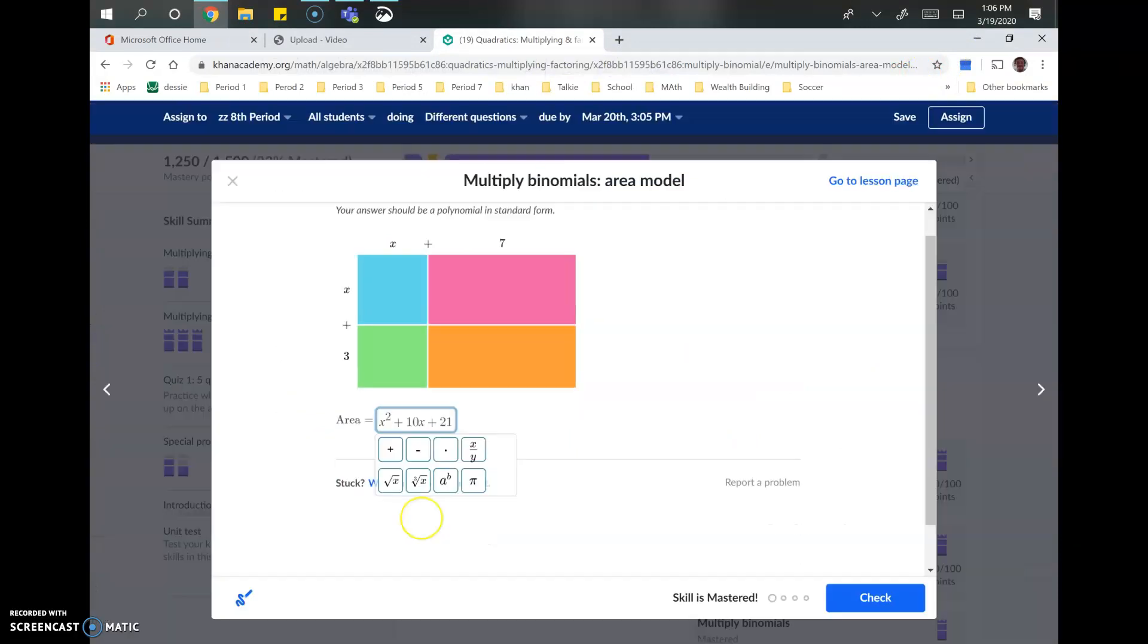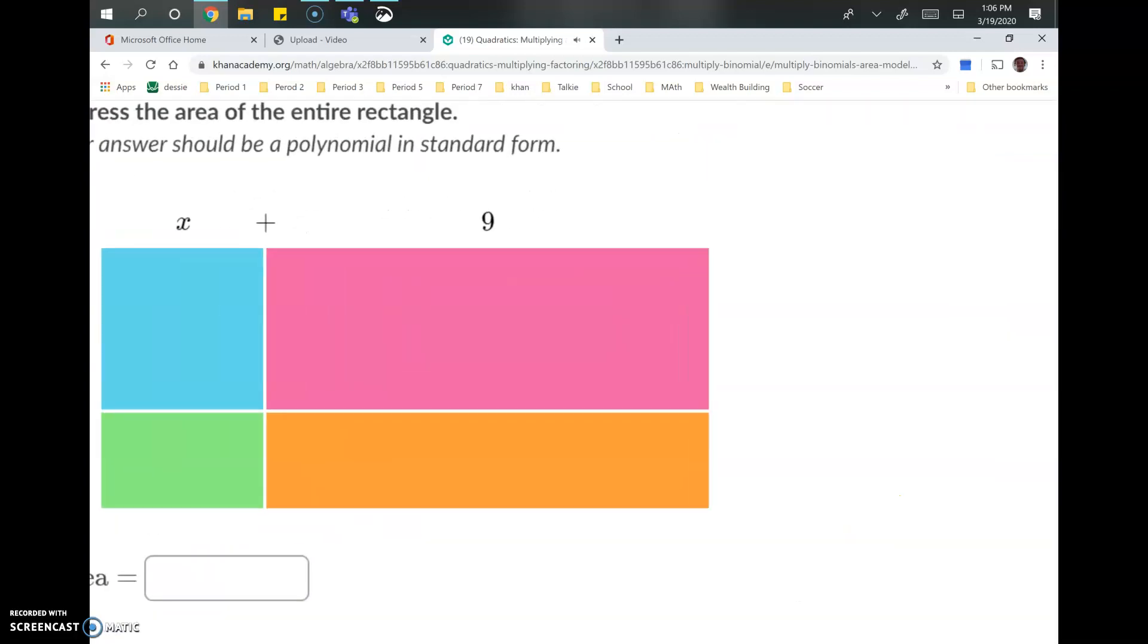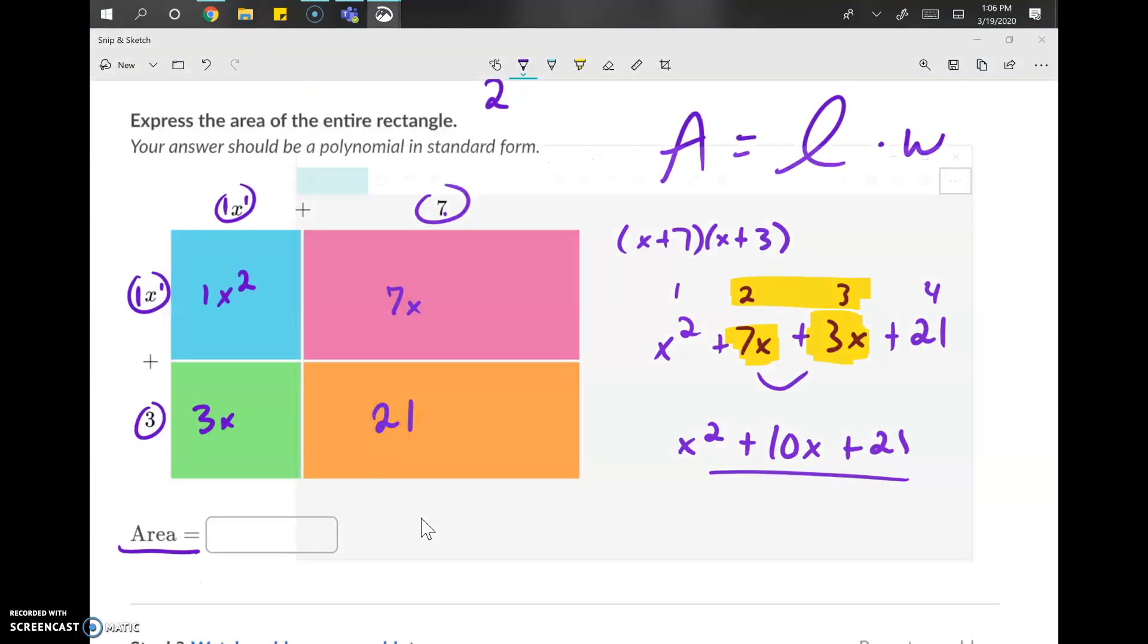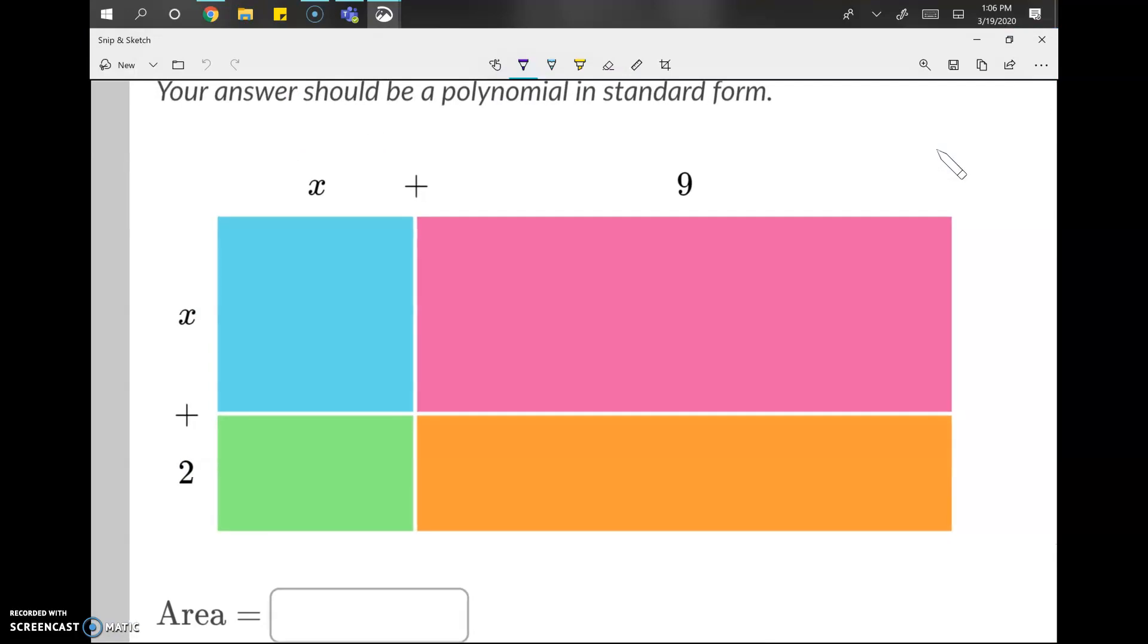x squared plus 10x plus 21. That's cool. Boom, check. Let's rock and roll. And so as we go over these, you should begin to see a pattern developing that I'll reveal to you on the last problem. So we've got x times x is x squared. We've got x times 9. That's 9x. Now we've got x times 2. That's 2x. And now we've got 2 times 9. That's 18.